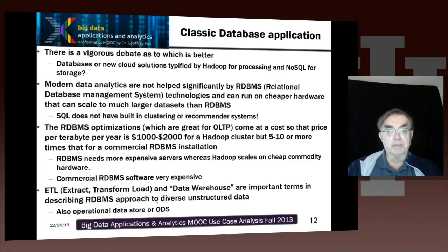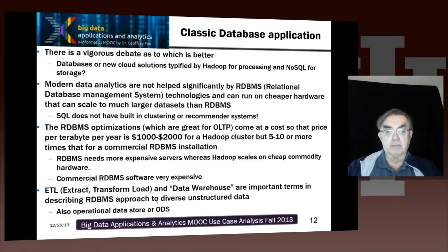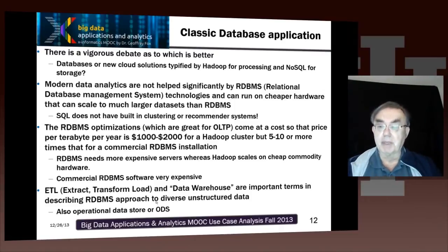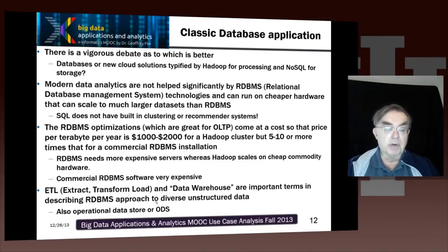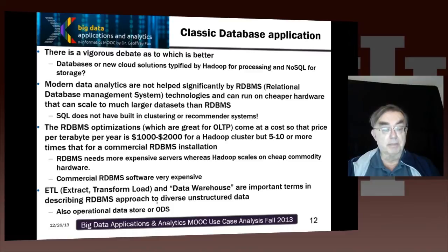On the web you'll see comparisons between databases and NoSQL or MapReduce presented as a cost issue. Processing a terabyte per year on a Hadoop cluster might cost $1,000 to $2,000 per year, but a commercial relational database can cost at least an order of magnitude more. One reason is the cost of commercial software like Oracle. Another is that relational databases, struggling to achieve parallelism and better performance, tend to use more expensive servers rather than the commodity servers that Hadoop uses.